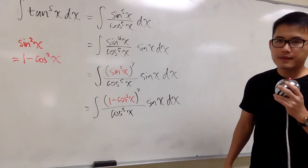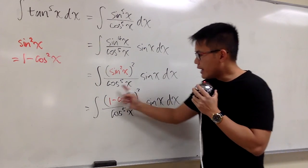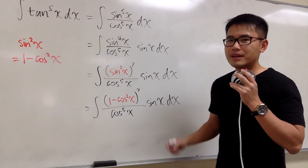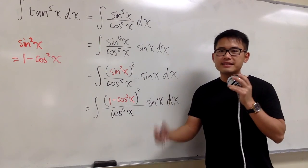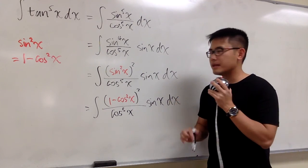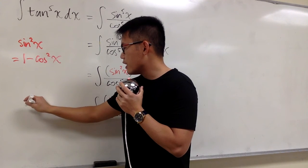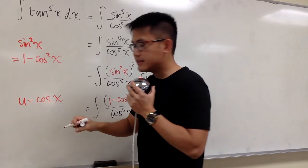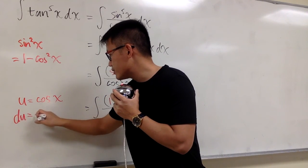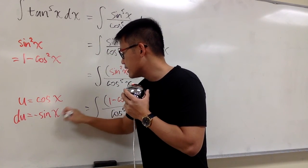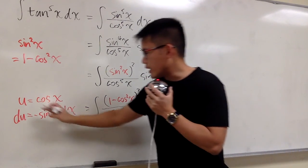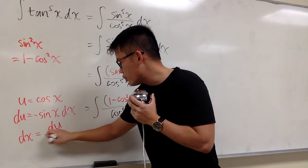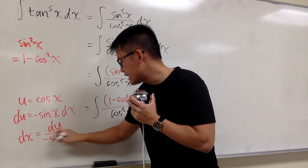The advantage of this setup is that we can use u-substitution. Let u equal cosine x, because the derivative of cosine is negative sine, and we can cancel out this sine factor. So let u equal cosine x, which gives us du equals negative sine x dx. Isolating dx, we divide both sides by negative sine x, so dx equals du over negative sine x.